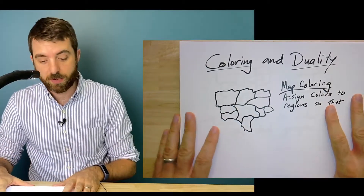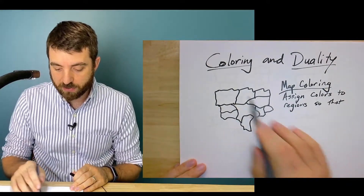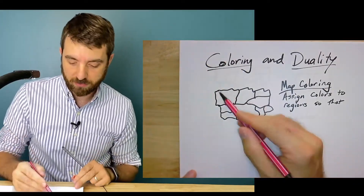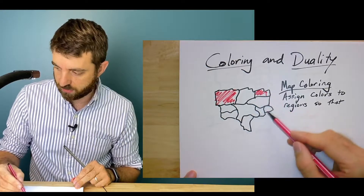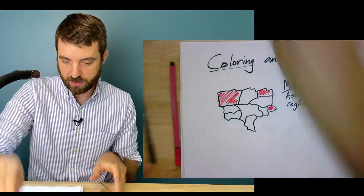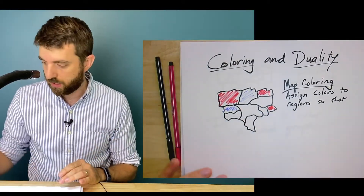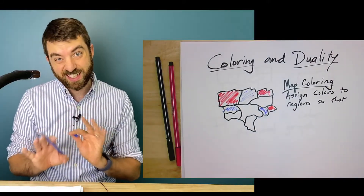There is a wonderful connection between the graph coloring problem and topology, and we're going to see it today in this video. It starts right here with this question about coloring maps. If I have a map — I've drawn a map here, some kind of area — the map coloring problem is: I want to color in these regions. Maybe I'll call this one red, and this one red, and this one red, and I need some more colors.